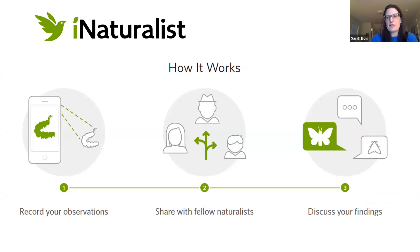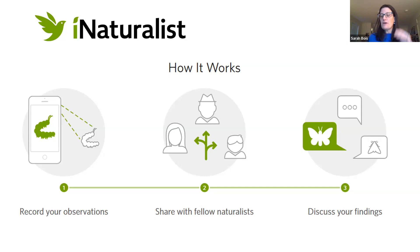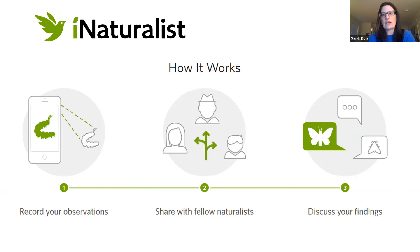At its heart, here's the most basic way it works — really just three steps, or even two if you don't want to do the last one. You record your observations of anything that's alive, you share them by posting to iNaturalist, and then optionally you can discuss, identify others' observations, or have biodiversity interactions. It's a really easy way to engage in community science while contributing data about Nantucket's biodiversity.